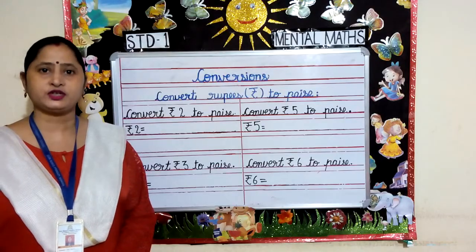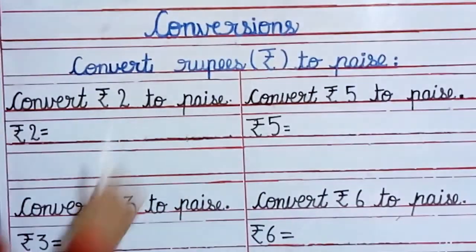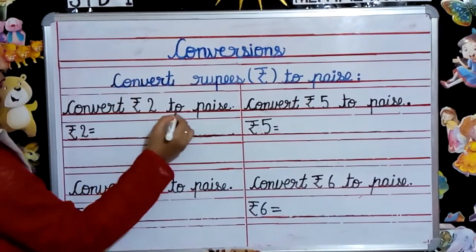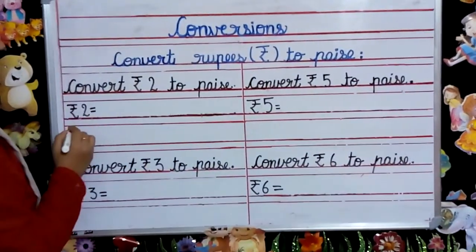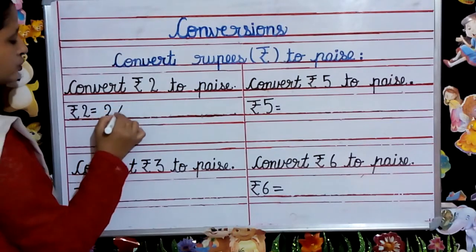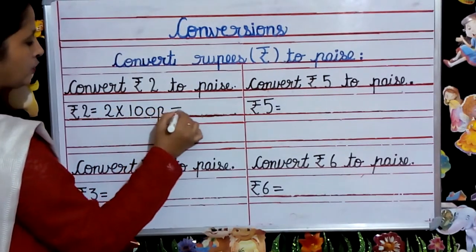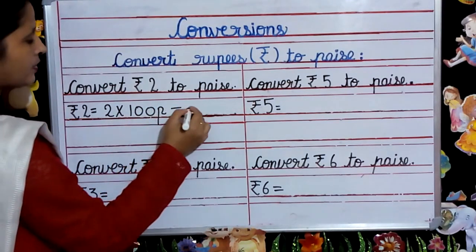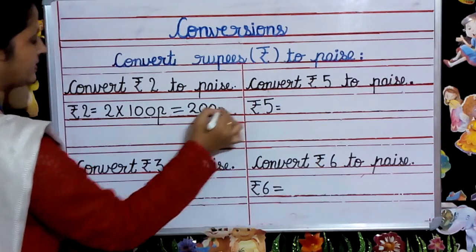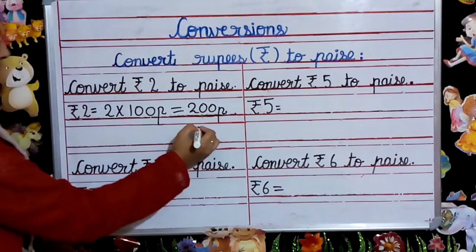Now I will teach you how to convert rupees to paise. Convert rupees 2 to paise. For converting rupees 2 to paise, we multiply 2 with 100 paise. 2 multiplied by 100 equals 200 paise. So rupees 2 is equal to 200 paise.